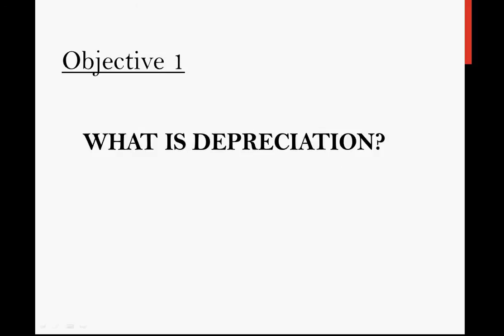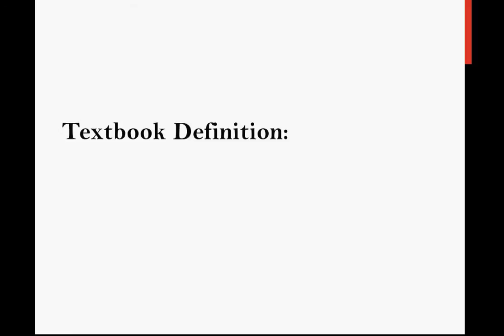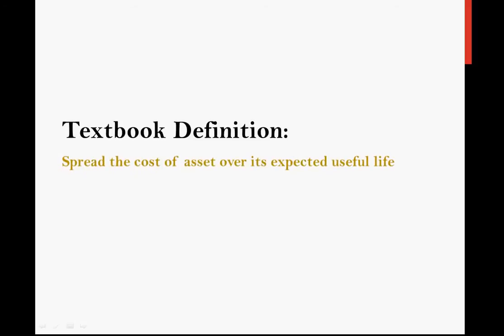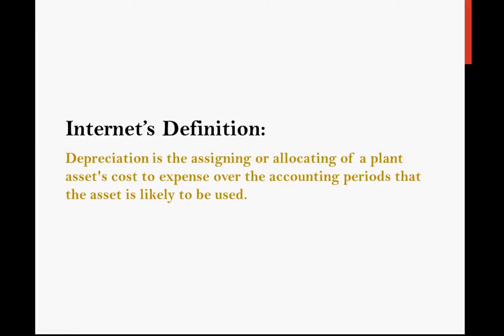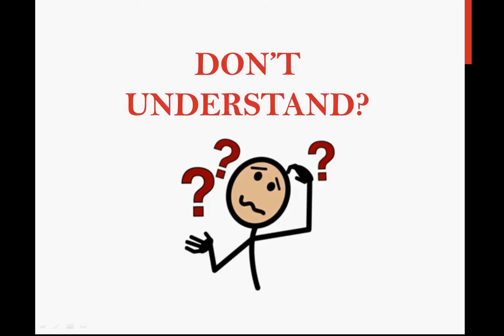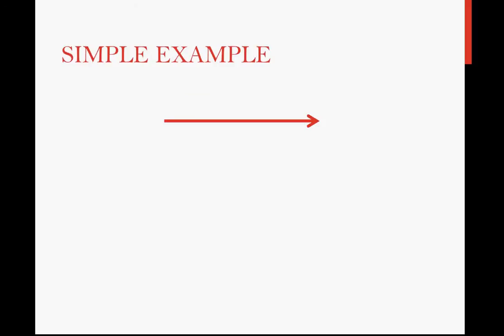Objective one: what is depreciation? This is your textbook's definition: depreciation is the spread of the cost of an asset over its expected useful life. The internet's definition: depreciation is the assigning or allocating of a plant asset's cost to expense over the accounting period that the asset is likely to be used. Let me give you a simple example to demonstrate what depreciation is.